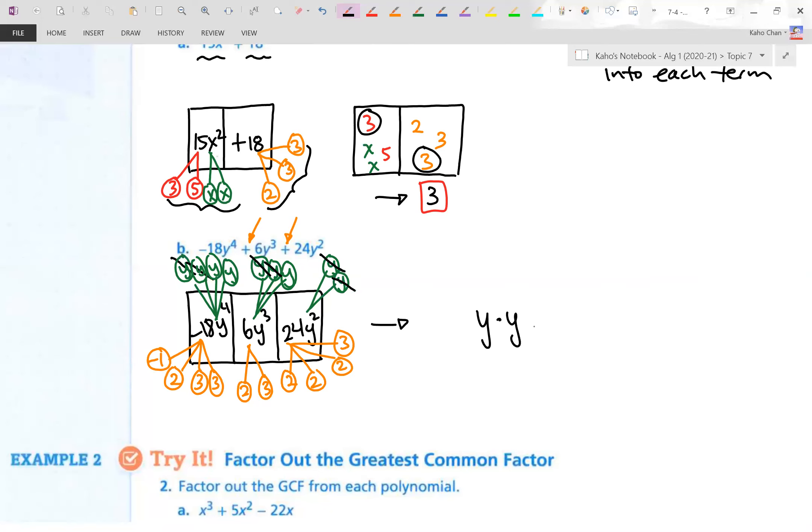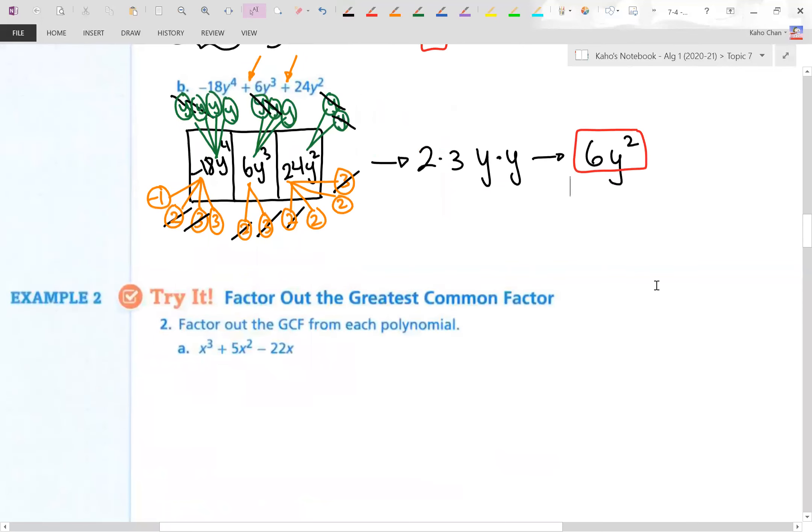How about the coefficients? Let's take out the numbers here. There's a 2 here, 2, and a 2 there, so I'll take out a 2, and a 3 in each of those terms, and nothing else. So ladies and gentlemen, my greatest common factor is 2 times 3 times y times y, or simply 6y squared. Not too bad, huh?